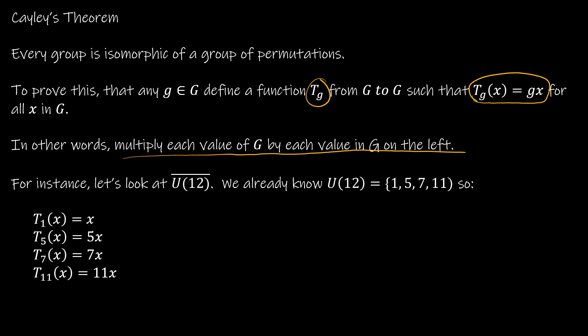So if we're looking at U12 — in the same way that we say G is isomorphic to G-bar, this is U12-bar, which is the group it's going to be isomorphic to. U12 is the set of all values less than 12 and relatively prime to 12, which I've already listed: one, five, seven, and eleven.